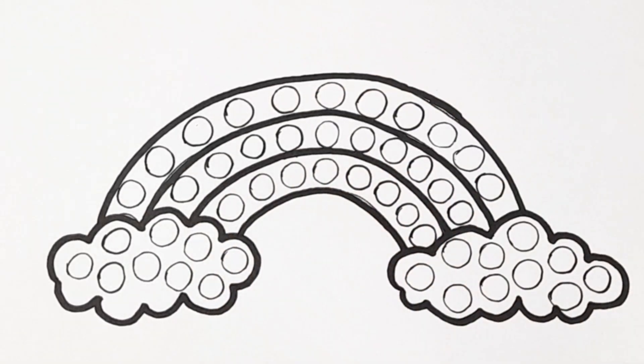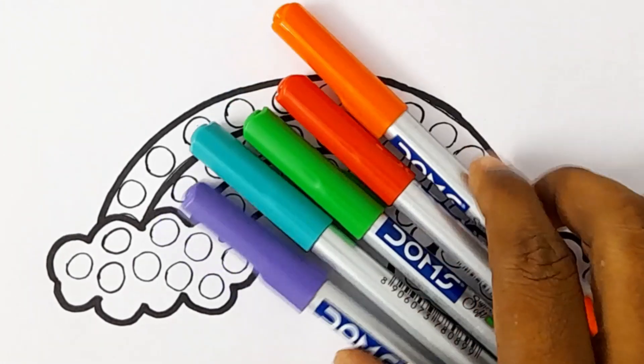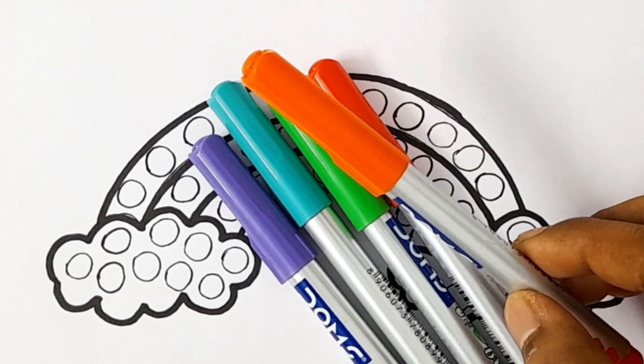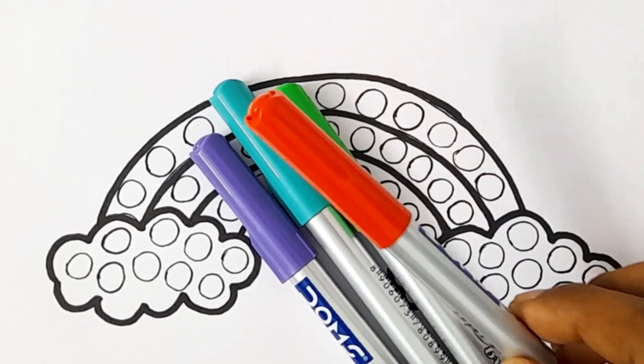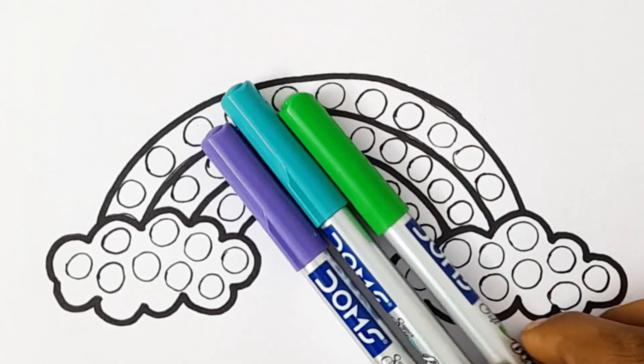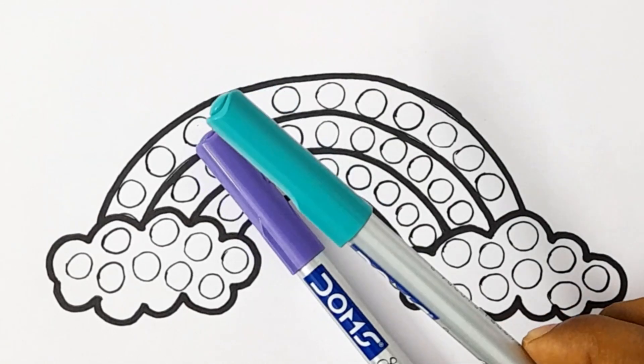Now it's time to color! Let's learn the colors' names: orange color, red color, green color, cyan color, purple color, white color.